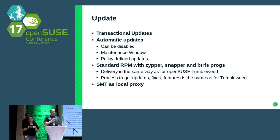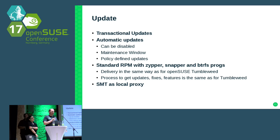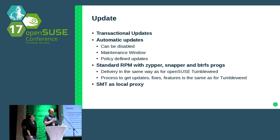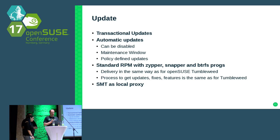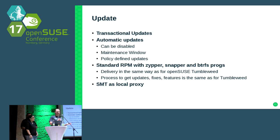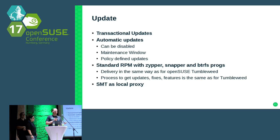We deliver updates in the same way as OpenSUSE Tumbleweed. Even though it's called OpenSUSE Kubic, you add the OpenSUSE Tumbleweed update repos and get the RPMs from there. You'll see all OpenSUSE Tumbleweed updates in these channels, but we only use updates for the RPMs we have installed. The process for getting updates, fixes, and features into OpenSUSE Kubic is the same as for OpenSUSE Tumbleweed.